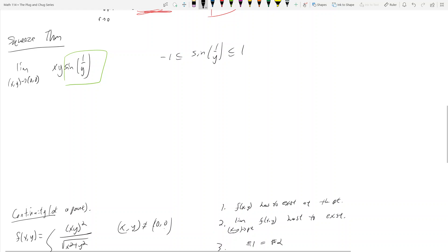And what does that mean? Well, that means if we work with this inequality, what happens? We have this inequality, sine is bounded by negative 1 and 1. So if we multiply both sides by xy, or if we multiply the entire thing through by xy.